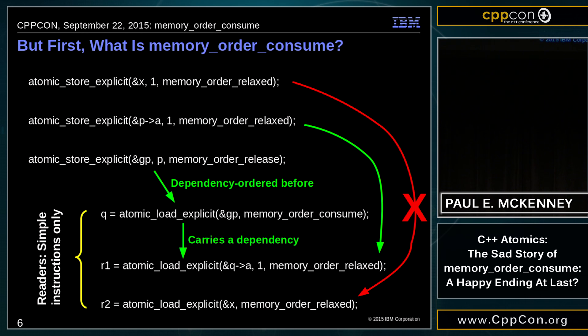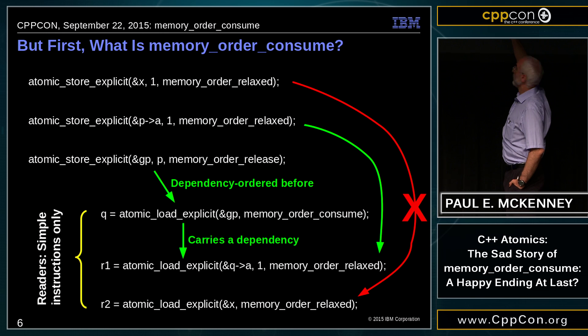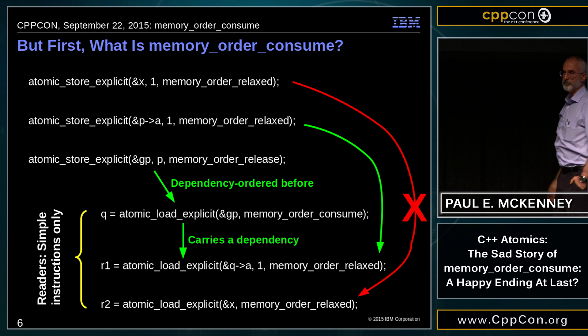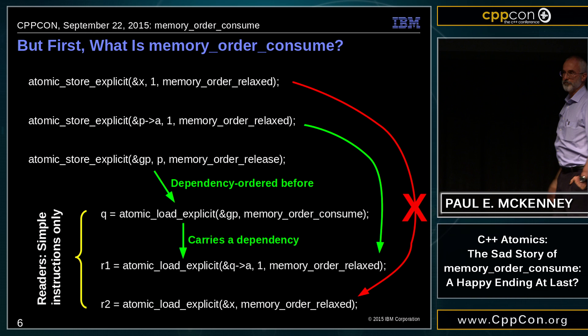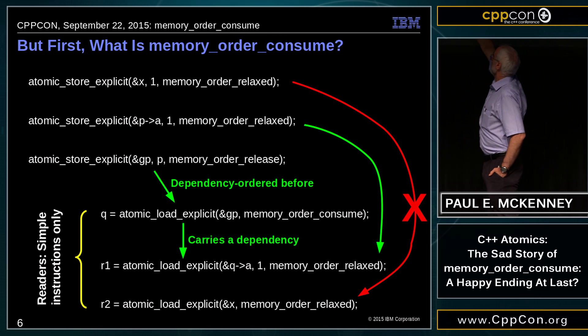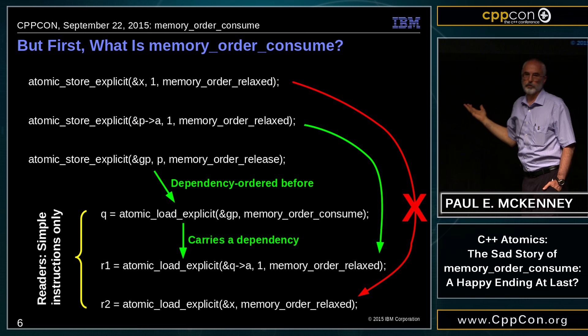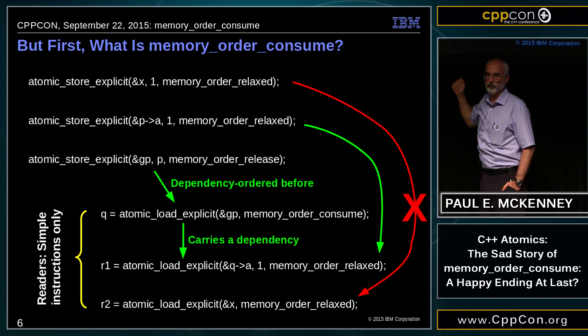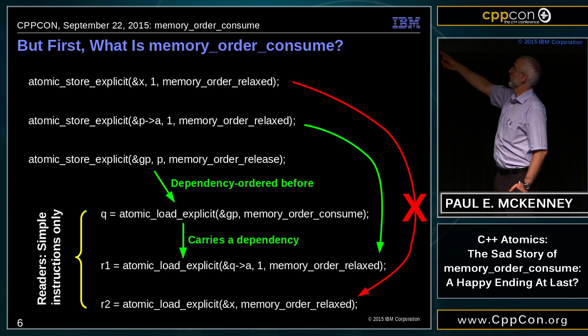We load from GP into Q, and then we use Q again for the dependent access. For X however, there's no dependency. We load Q, and it has nothing whatsoever to do with X. There is no dependency between those two statements, no ordering between them. We have ordering in the first thread but not in the second thread, and therefore this can pick up whatever value from X — it can pick up something before that initialization at the very top of the slide.